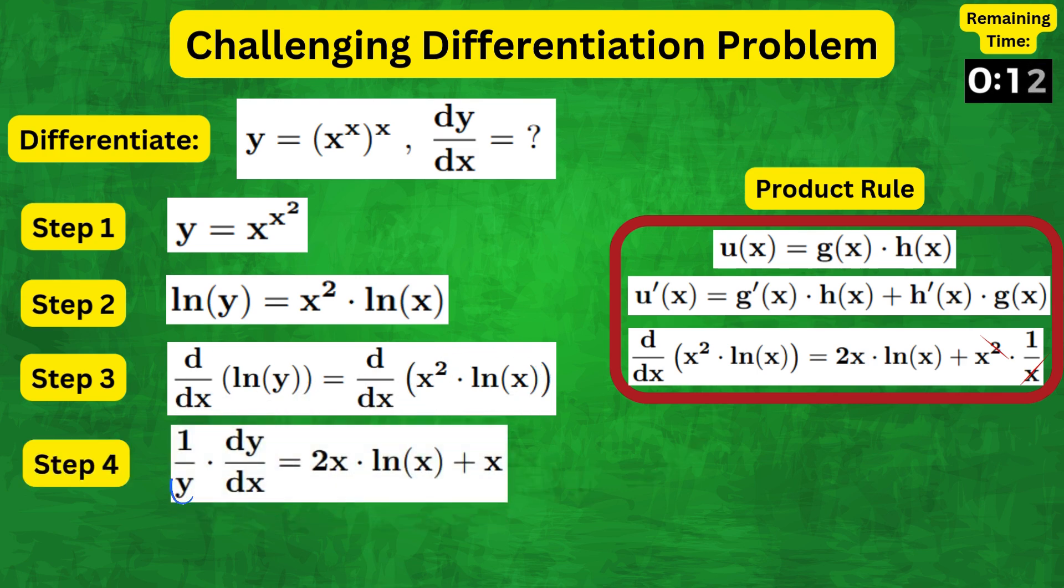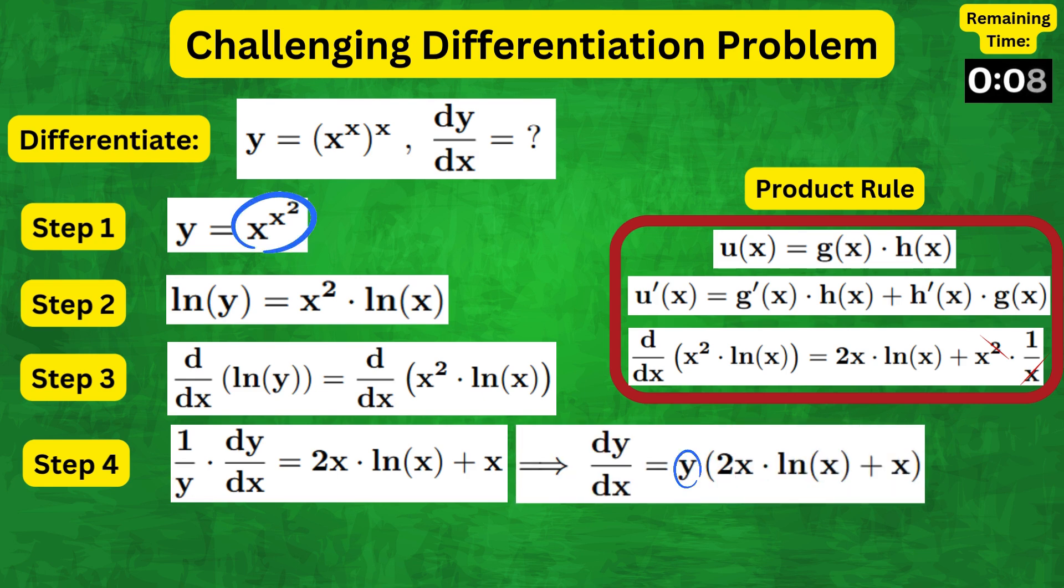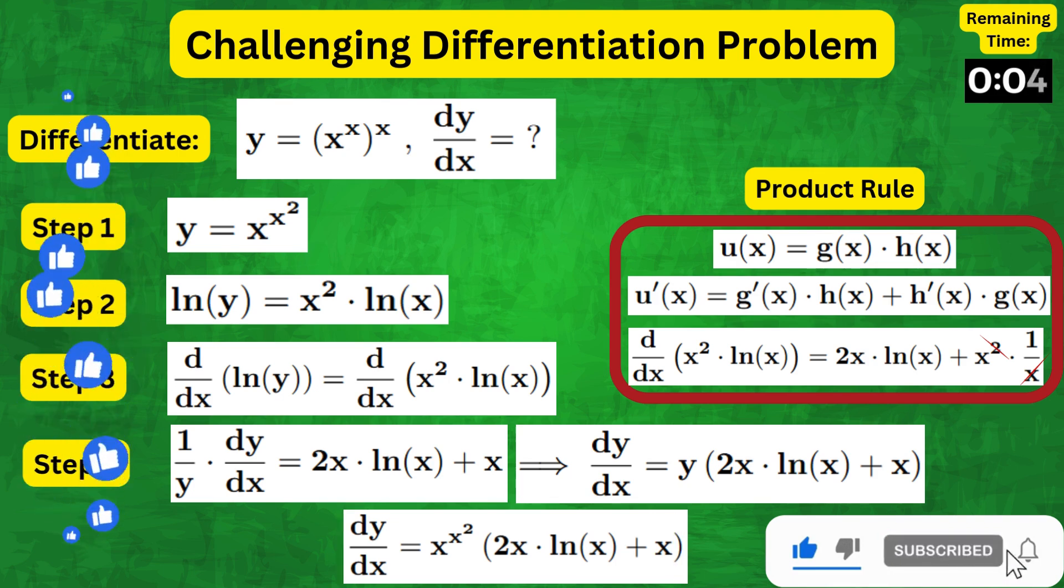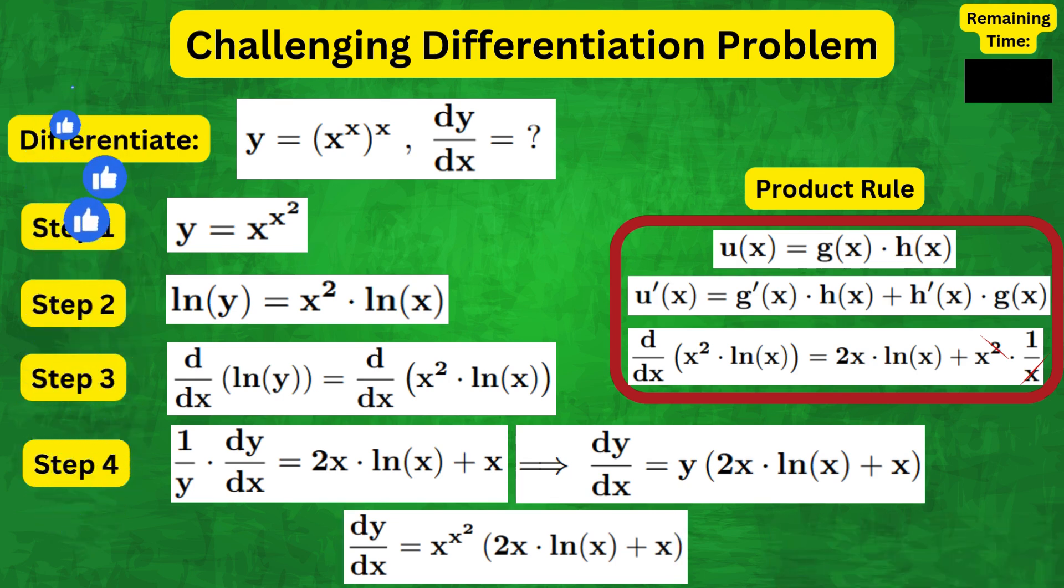Now, multiplying both sides of this equation by y and replacing y, we get the answer: dy by dx equals x to the x squared times 2x natural log of x plus x. A like really helps,